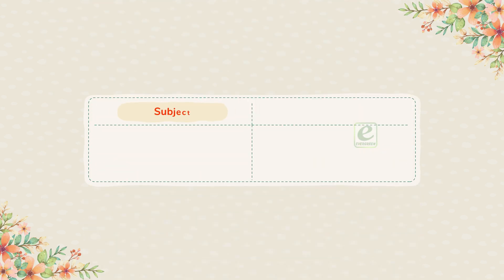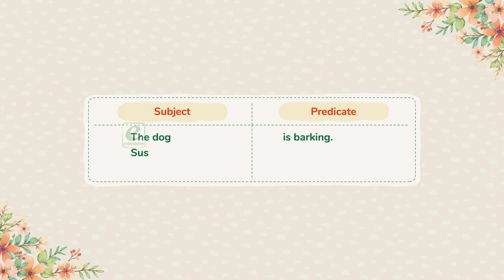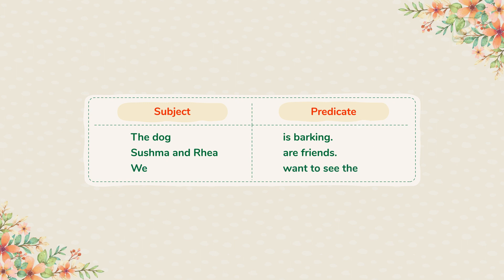Subject: The dog — Predicate: Is barking. Subject: Sushma and Ria — Predicate: Are friends. Subject: We — Predicate: Want to see the movie.